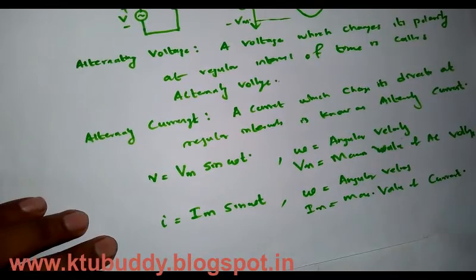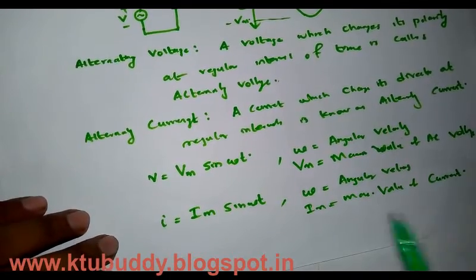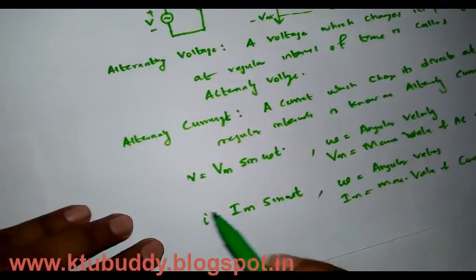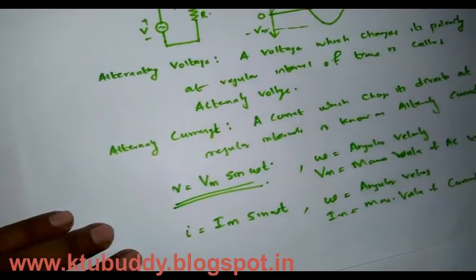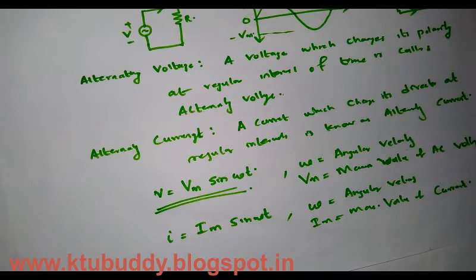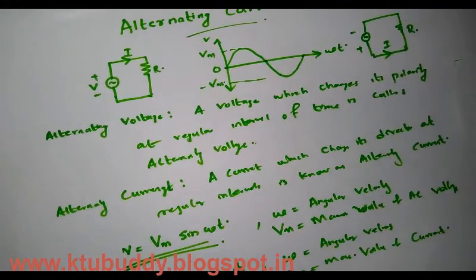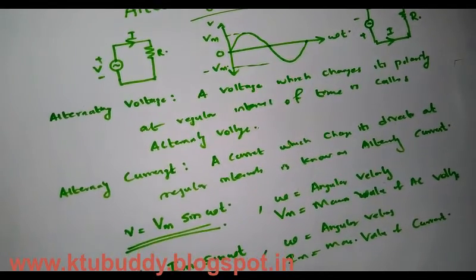These expressions are valid for purely resistive circuits. For inductive and capacitive circuits, the expressions may vary. We can simply represent sinusoidal voltage as V = Vmax × sin(ωt), where sin(ωt) determines the phase of the voltage at an instant. This is all about alternating voltage and alternating current.